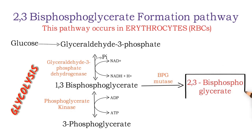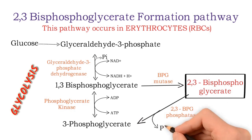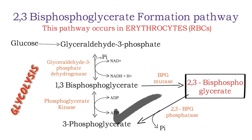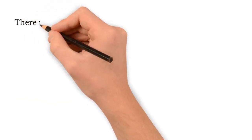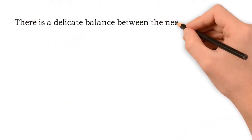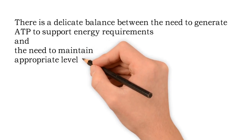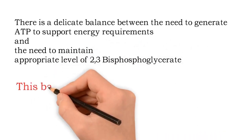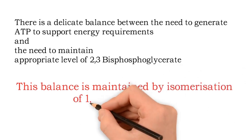2,3-bisphosphoglycerate is then hydrolyzed to 3-phosphoglycerate by 2,3-bisphosphoglycerate phosphatase. In the normal glycolytic pathway ATP is formed, but no ATP is formed in the Rapoport-Luebring cycle. There is a delicate balance between the need to generate ATP to support energy requirements and the need to maintain appropriate levels of 2,3-BPG. This balance is maintained by isomerization of 1,3-BPG to 2,3-BPG.